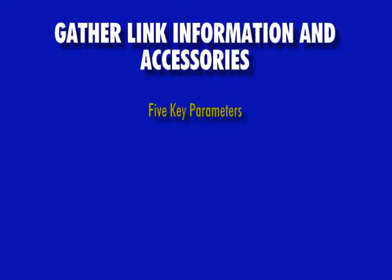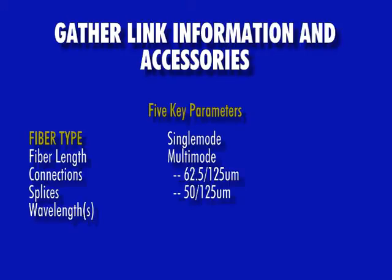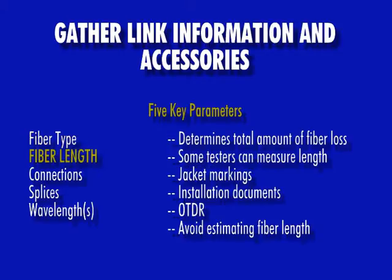There are five key parameters that apply to any fiber optic test. First is the fiber type, which will be either single mode or multi-mode — in the case of multi-mode, either 62.5 or 50 micron. Next is fiber length; it is important to know how much fiber is in the link to determine acceptable loss. Some OWL testers can measure end-to-end length automatically, including the Fiber OWL 4. Otherwise, use jacket markings, installation documents, or OTDR. Avoid estimating fiber length whenever possible.